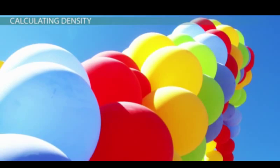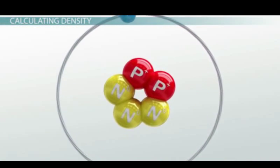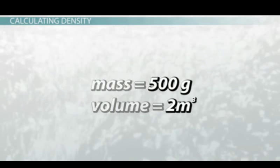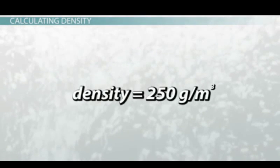If we knew the mass of the gas and the volume, we can easily calculate density. Let's assume we have a gas with a mass of 500 grams and a volume of 2 cubic meters. Dividing 500 by 2 will give you a density of 250 grams per cubic meter.